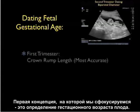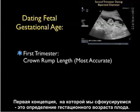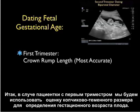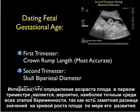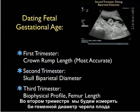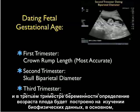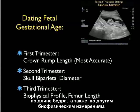The first concept we'll focus on is dating fetal gestational age. In the first trimester, we're going to use an assessment of the crown rump length. Dating in the first trimester is actually probably the most accurate during all phases of pregnancy, as there's a difference in the growth curve as the fetus develops. In the second trimester, we'll measure the skull biparietal diameter. In the third trimester, dating is composed of a biophysical profile focusing on femur length as well as other biophysical measurements.